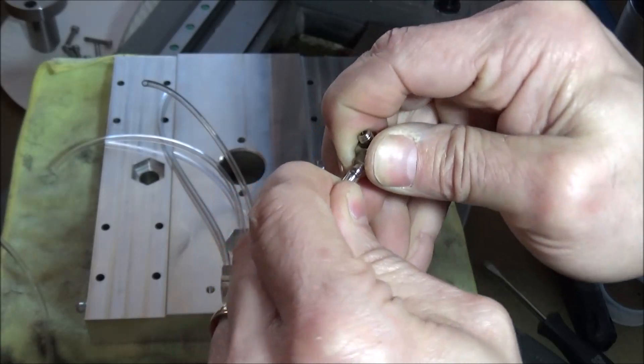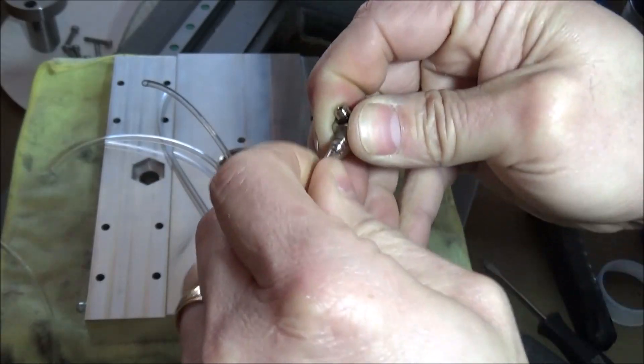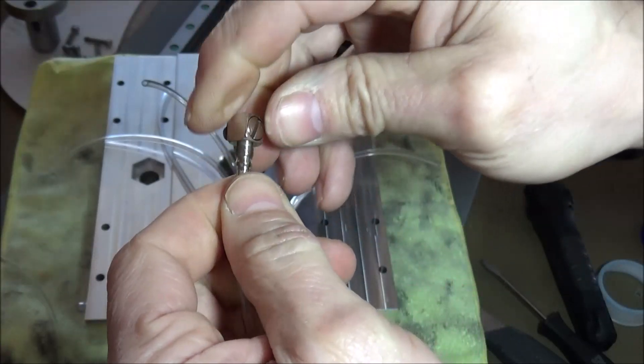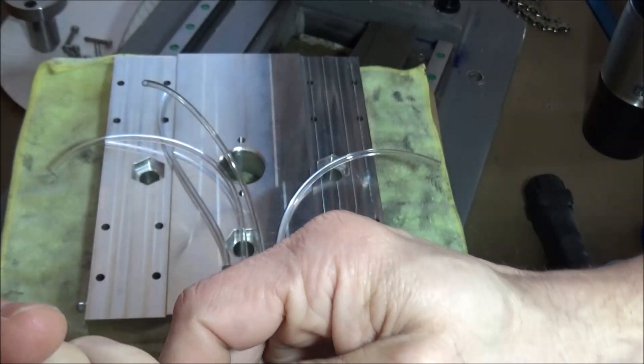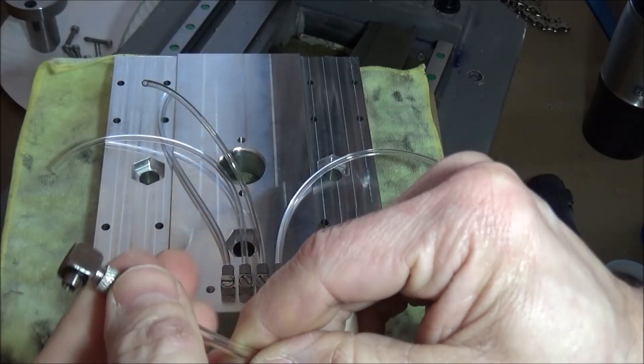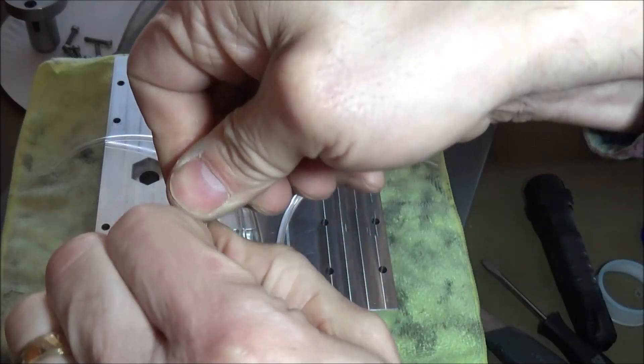Now it's a little difficult to get it kind of started, but once you get it on over there, then it slides over the hose pretty good. And then just slide your nut over and tighten it up.